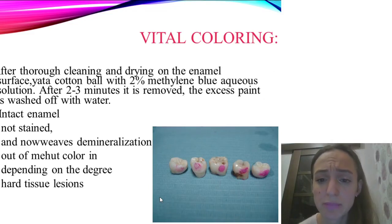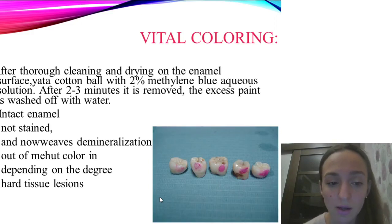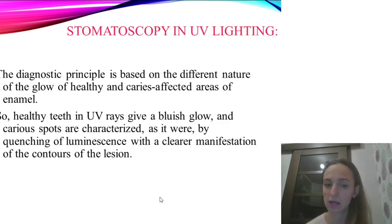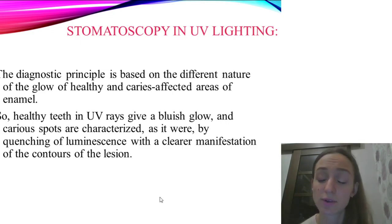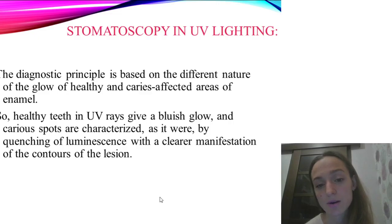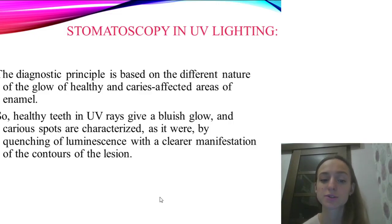Vital staining: after thorough cleaning and drying, a 2% methylene blue solution is applied to the enamel surface with a cotton ball. After two to three minutes, the excess paint is washed off with water. Intact enamel is not stained, while areas of generalized hard tissue caries are colored depending on the degree of hard tissue damage. Stomatoscopy in ultraviolet light: the diagnostic principle is based on different nature of the glow of healthy and caries-affected areas of enamel. Healthy tissues in ultraviolet rays give a bluish glow, while caries spots are characterized by quenching of luminescence with a clear manifestation of the contours of lesions.